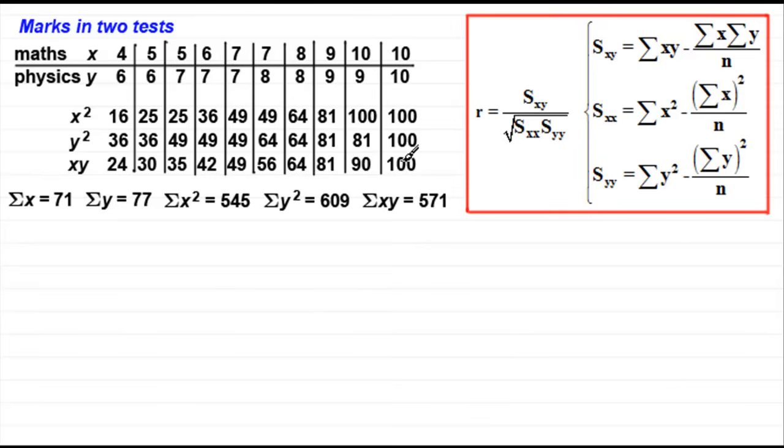Now that we've got that, we can start to work out what sxy is. So sxy is going to be, according to the formula, sum of xy (571) minus sum of x times sum of y (71 times 77) divided by n, the number of observations, which is going to be 10. And work that out on your calculator and you should find you get 24.3.